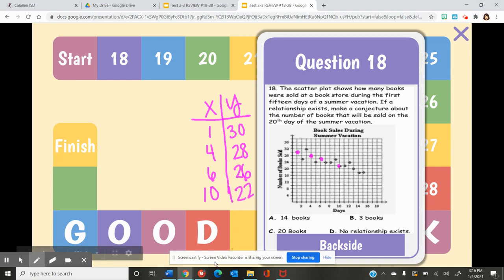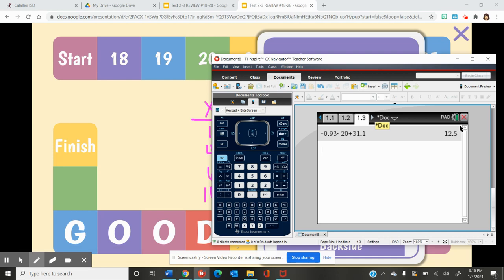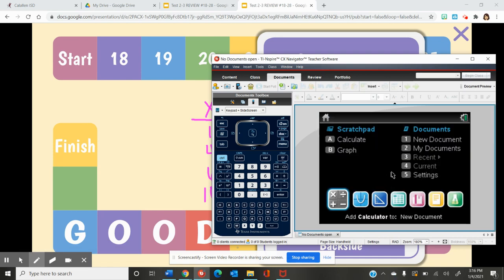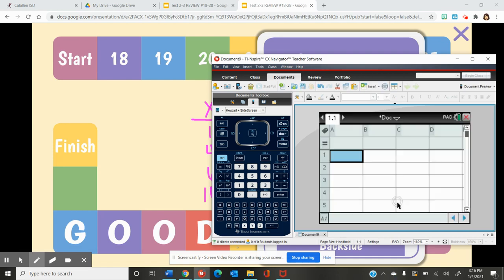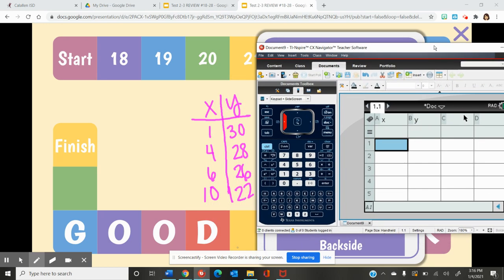We're going to open up our calculators, and we want to open up a list in spreadsheets. The first thing we do is label cell A as X and B as Y. Now we can start entering in our X values: 1, 4, 6, and 10.